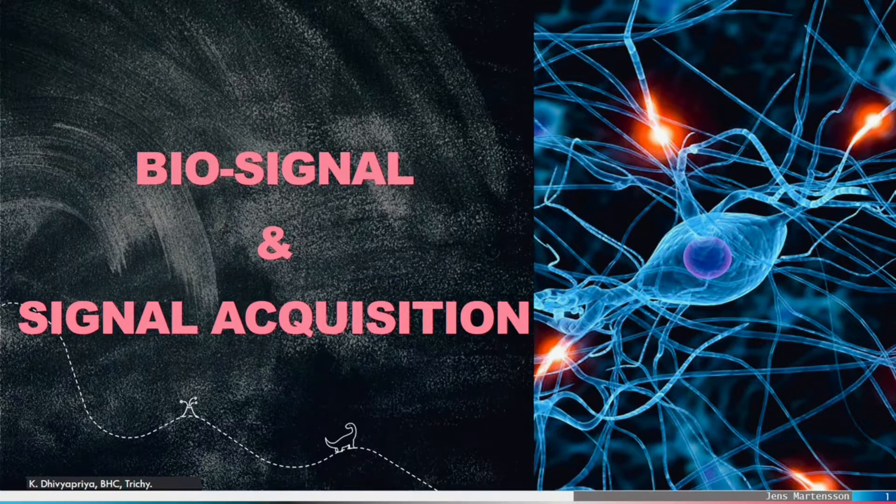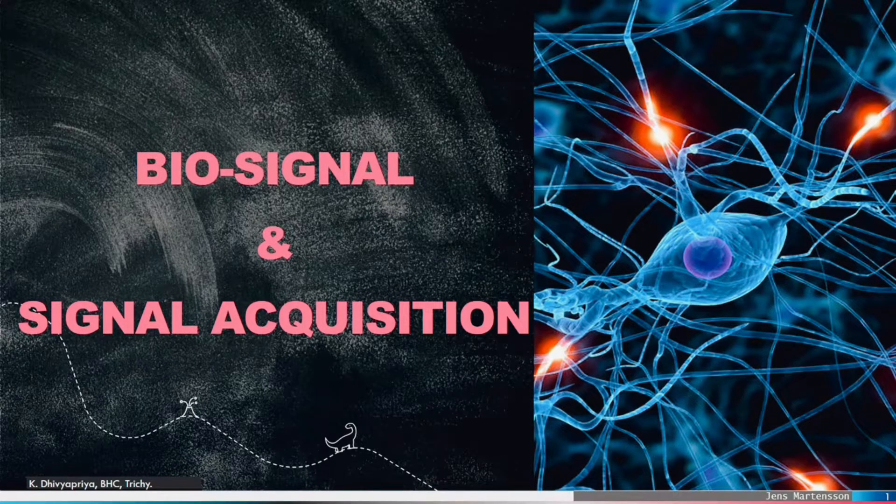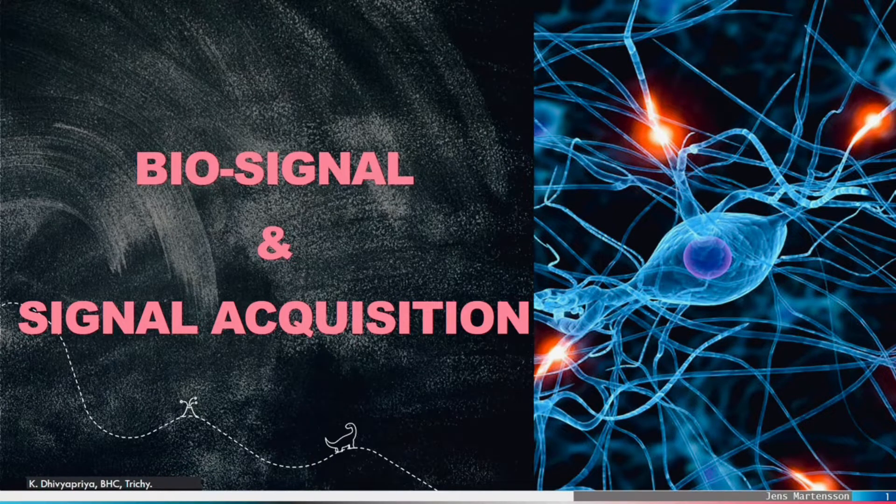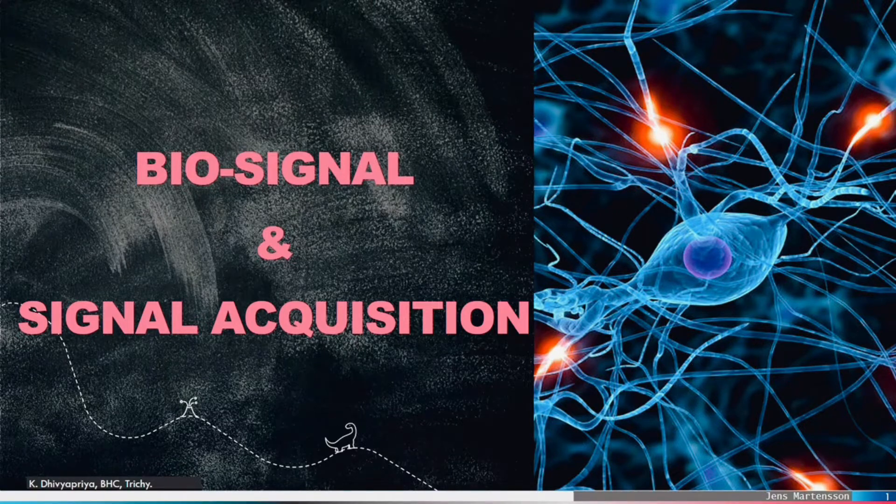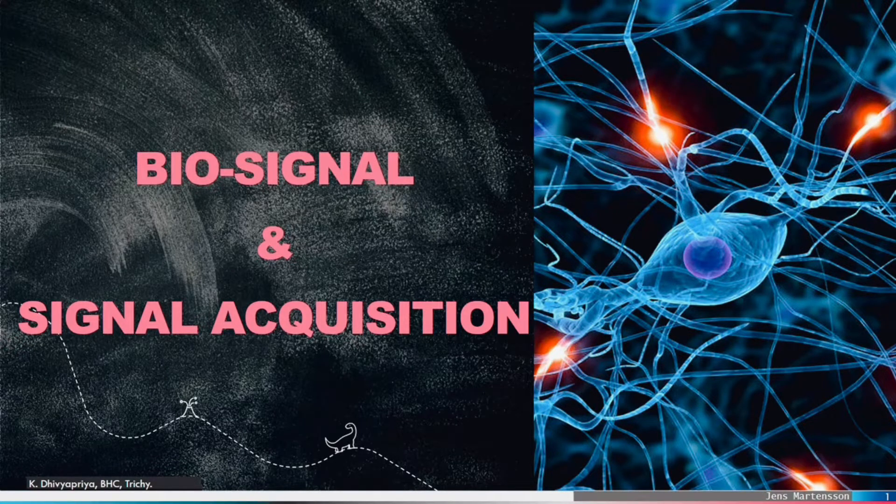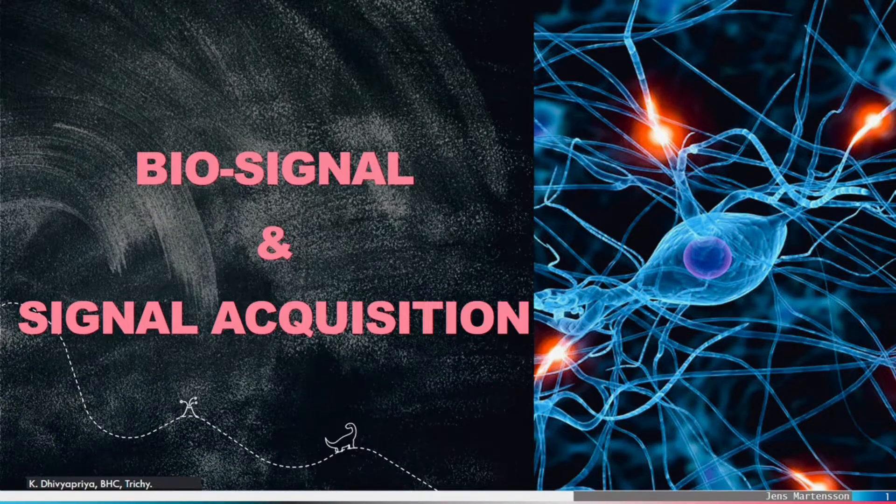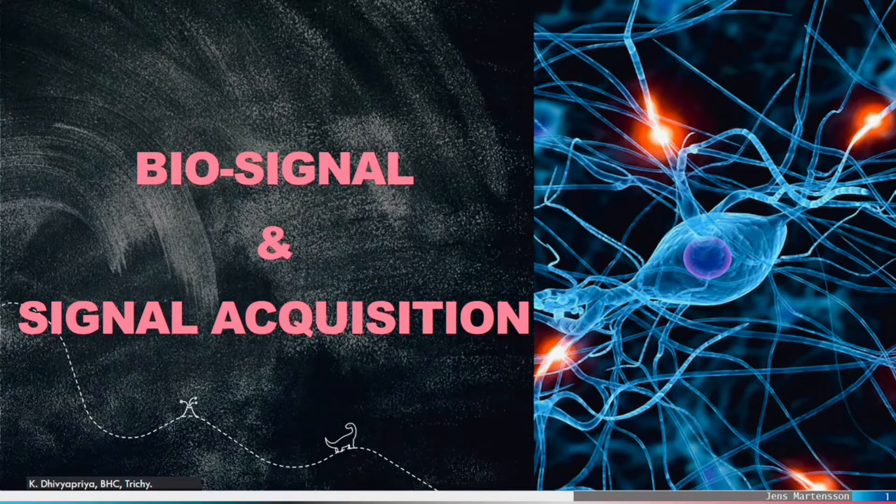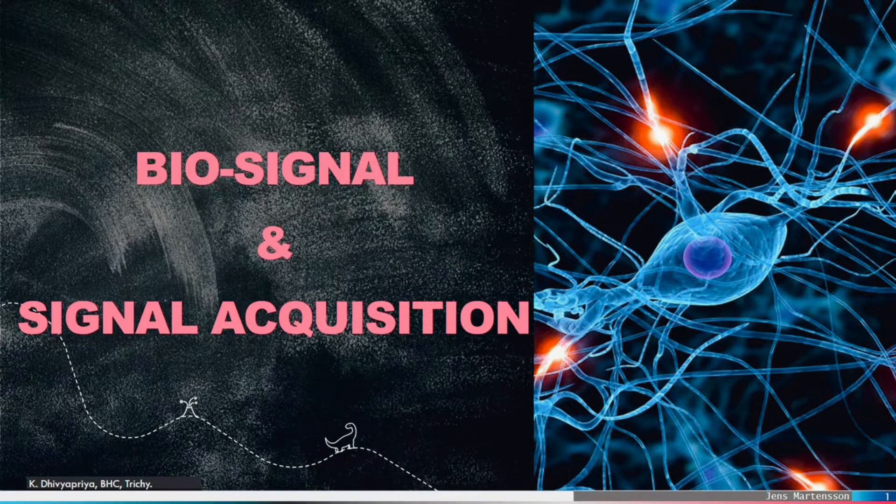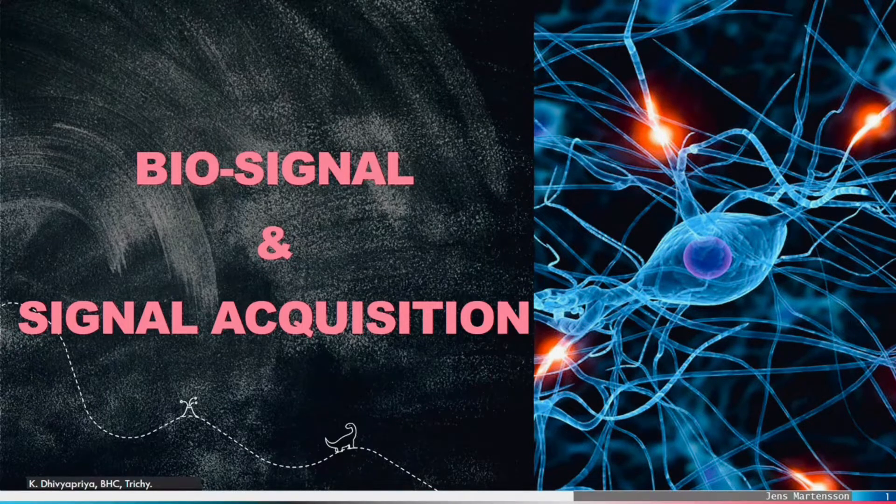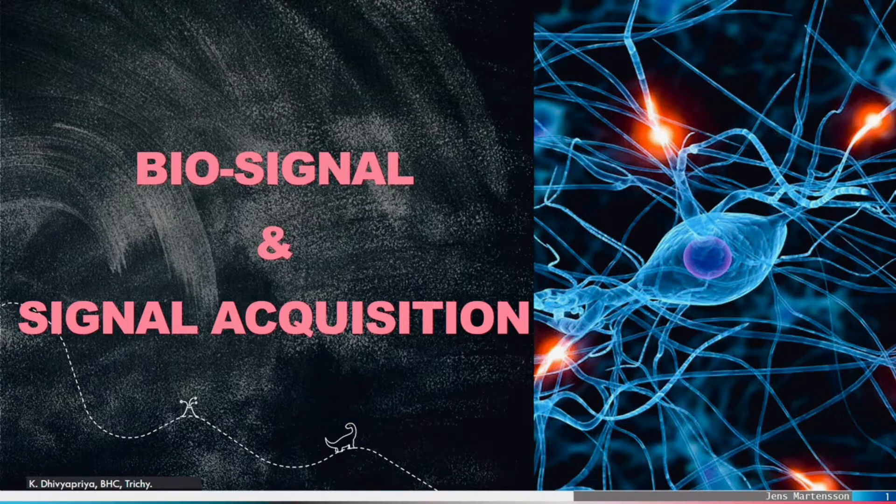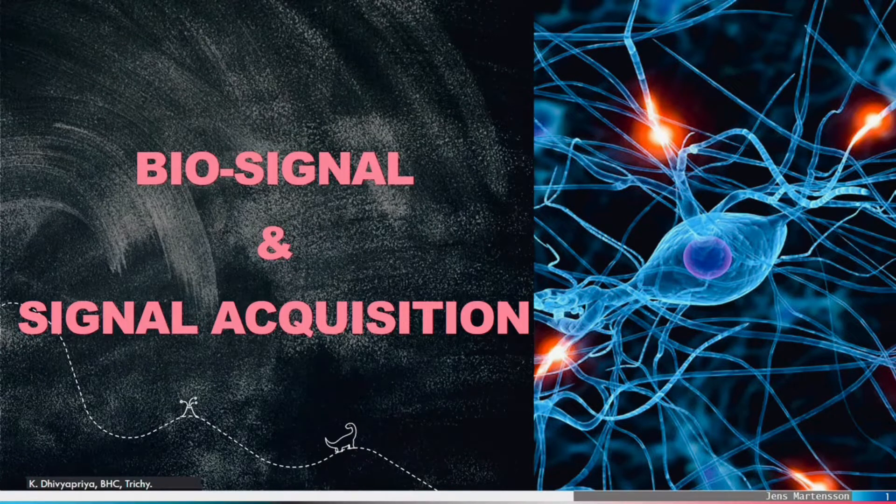In most cases it is an electrical voltage, or in other words, it is a function that conveys information about the behavior or attributes of some physiological phenomenon. It is a biological quantity or magnitude exhibiting variation in time or variation in space, which is potentially a signal that provides information on the status of a biological system.